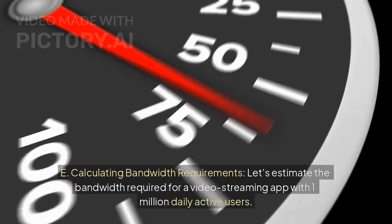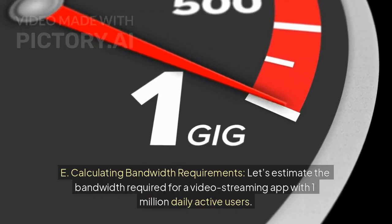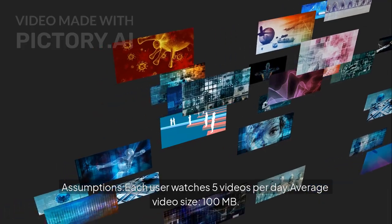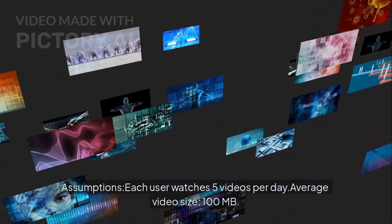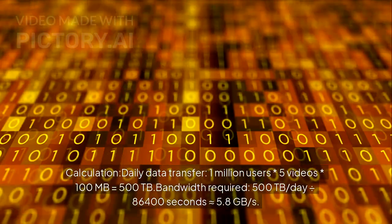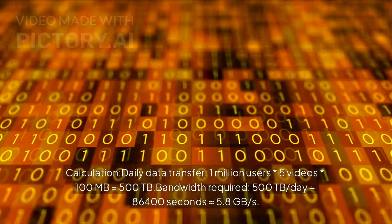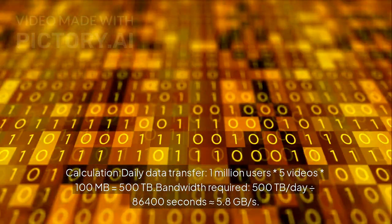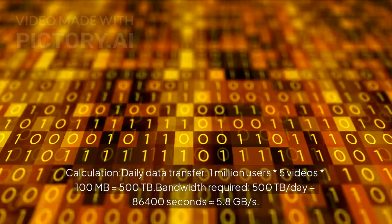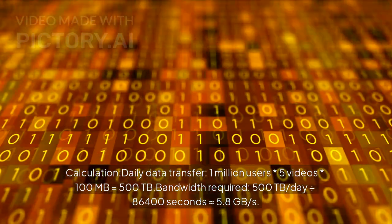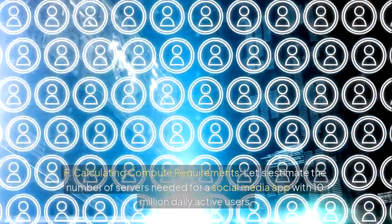E: Calculating bandwidth requirements. Let's estimate the bandwidth required for a video streaming app with 1 million daily active users. Assumptions: each user watches 5 videos per day, average video size 100 MB. Calculation — daily data transfer: 1 million users × 5 videos × 100 MB = 500 TB. Bandwidth required: 500 TB per day ÷ 86,400 seconds ≈ 5.8 GB per second.